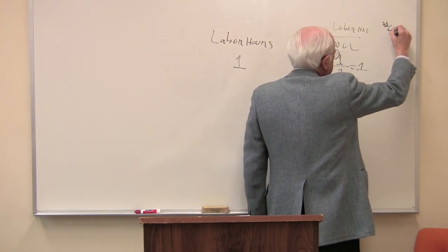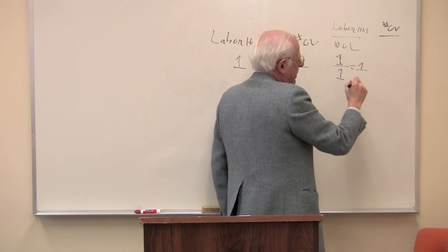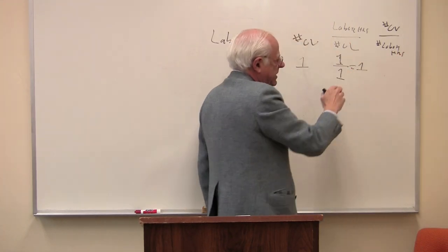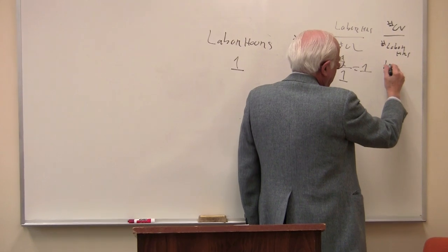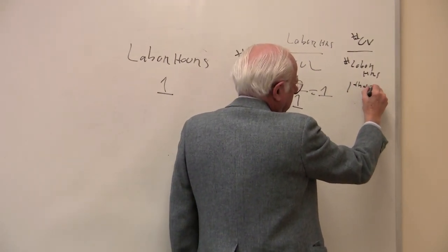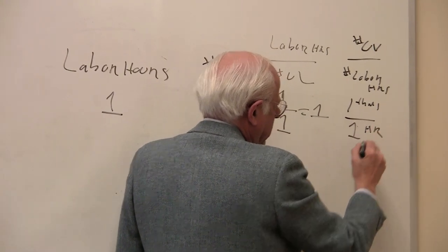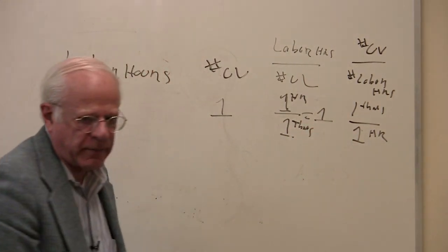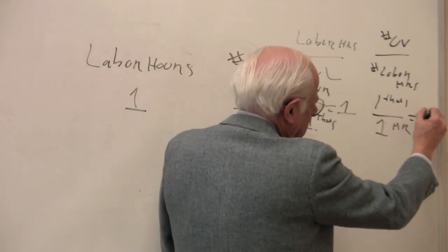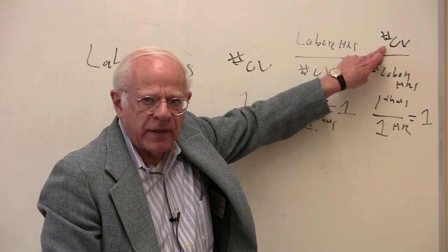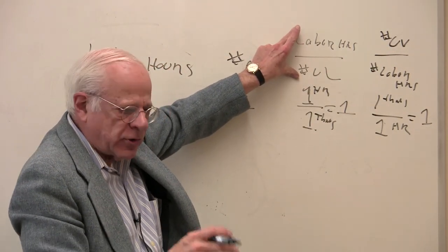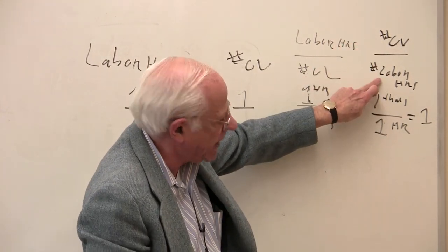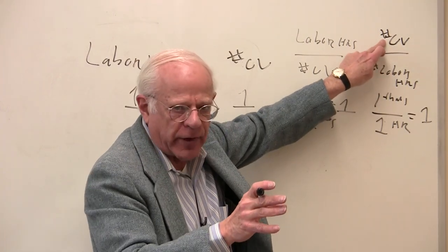So this is the socially necessary abstract labor time per thing — the concept we've been talking about. Now I want to take the reciprocal of it. This is the number of use values — the wealth — in the numerator, divided by the number of labor hours in the denominator. So this would be one thing divided by one hour. The upside-down of this is equal to the productivity of labor. The socially necessary abstract labor time per thing and the productivity of that abstract labor are reciprocals of each other.